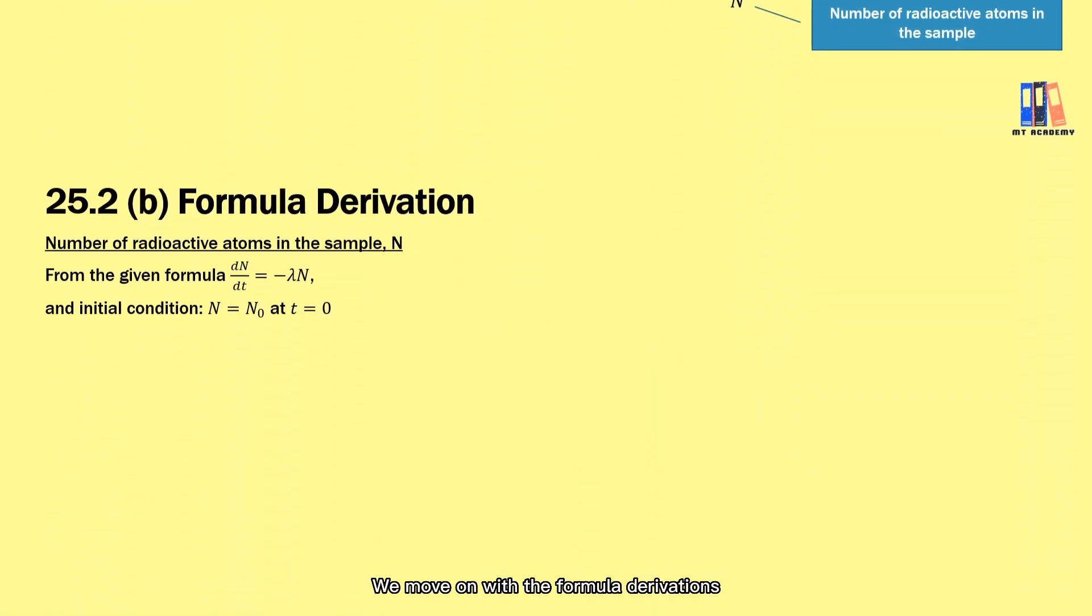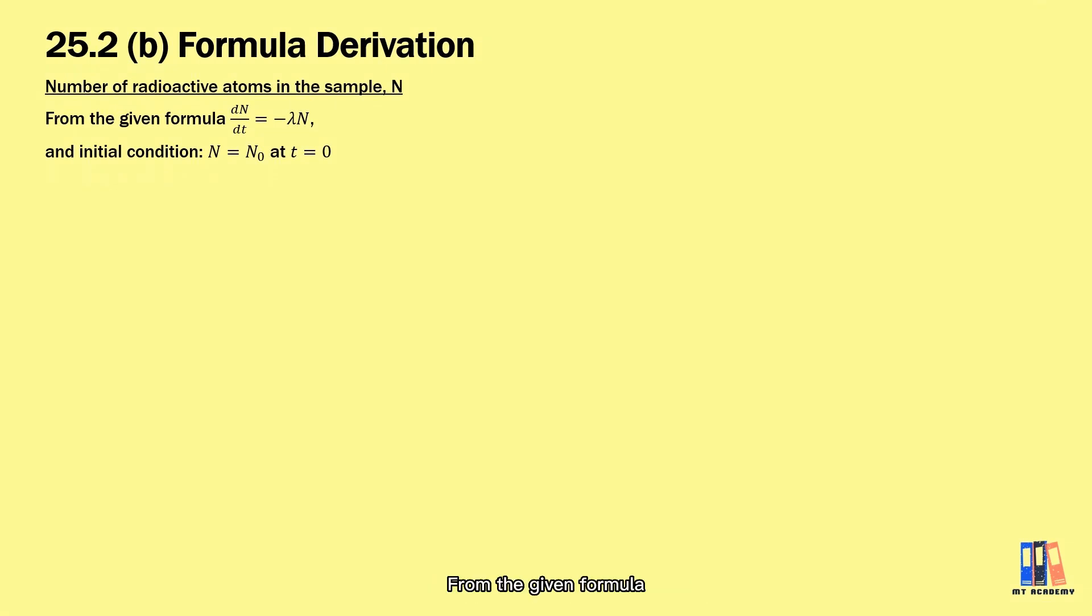We move on with the formula derivations. From the given formula dN/dt = -λN, we set the initial condition here as N₀ at t = 0 seconds. Here we can rearrange the formula and perform the integration. You should be able to get the equation N = N₀e^(-λt).